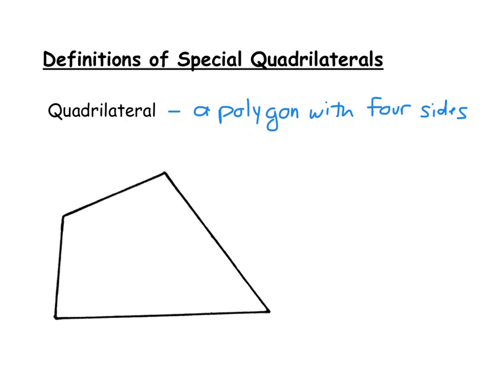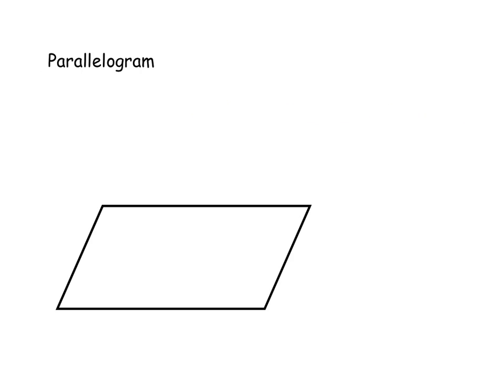The prefix 'quad' in the word refers to four. The first type of special quadrilateral we'll look at is called the parallelogram. You may have already spent some time in class looking at the parallelogram and its properties, so this would just be a quick review. A parallelogram is almost defined by its name — you'll see the word 'parallel' as part of it. A parallelogram is simply a quadrilateral with both pairs of opposite sides parallel.